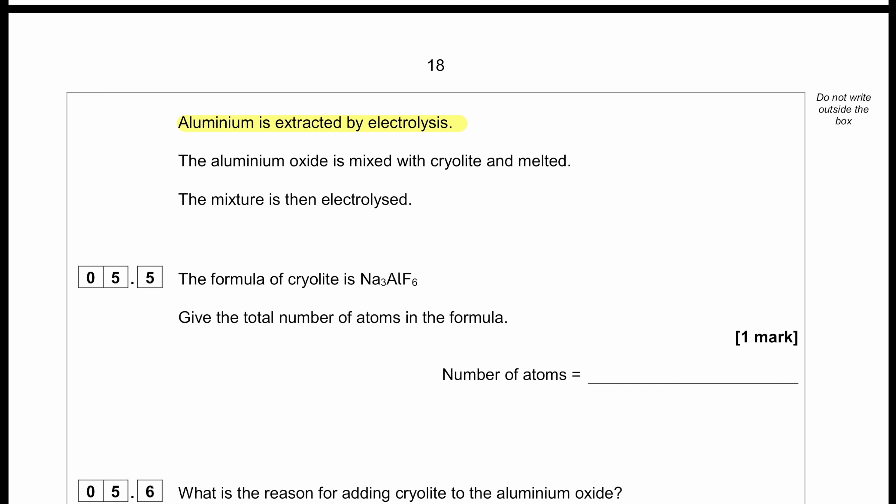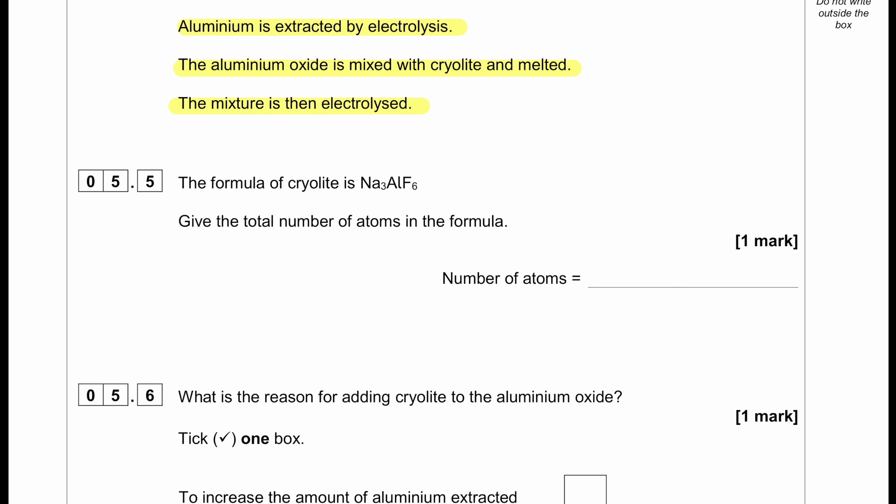Aluminium is extracted by electrolysis. Aluminium oxide is mixed with cryolite and melted. The mixture is then electrolyzed. The formula of cryolite is Na3AlF6. Give the total number of atoms in the formula. So we can see there are three sodiums, there is one aluminium, and there is six fluorine. So total 10.